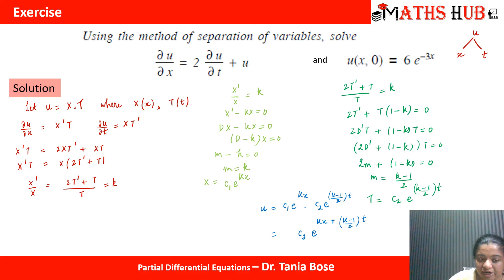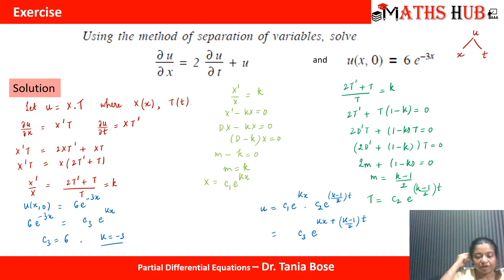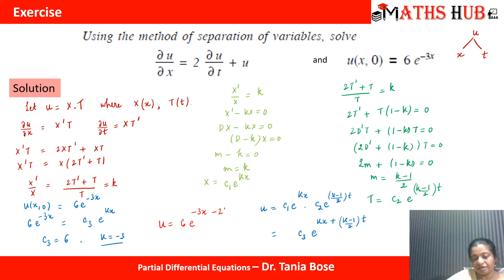Applying the initial condition u(x, 0) = 6e^(-3x): setting t = 0 gives c3·e^(kx) = 6e^(-3x). Comparing both sides, c3 = 6 and k = -3. With k = -3, the exponent for t becomes (-3 - 1)/2 = -2. So the final solution is u = 6·e^(-3x - 2t).